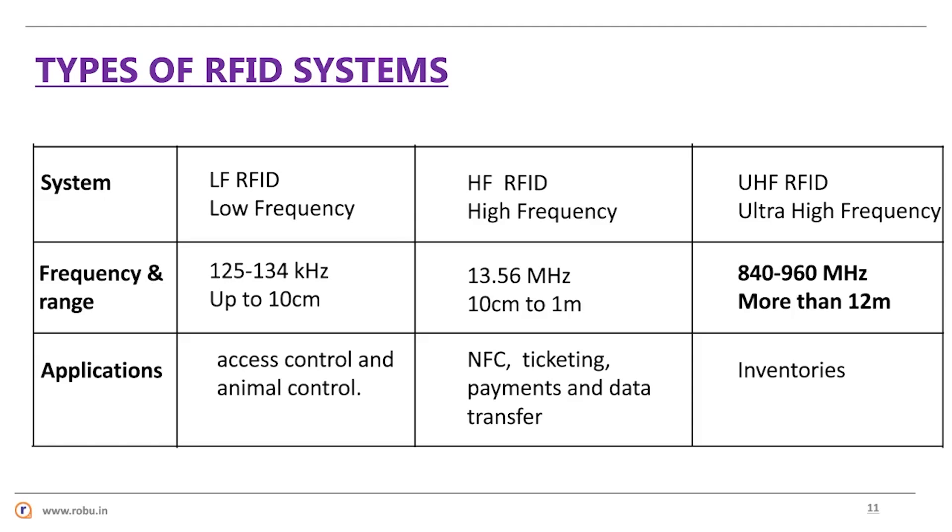RFID systems are based on various frequencies. Among these, the three most widely spread systems are LF RFID, HF RFID, and the most commonly used frequency is UHF RFID or RAIN RFID, 840 to 960 MHz.